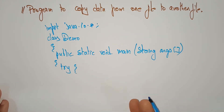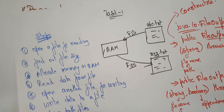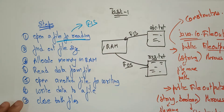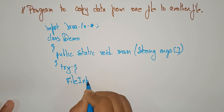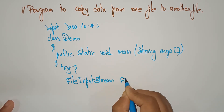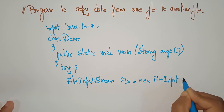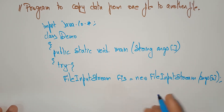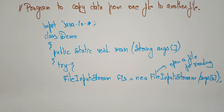First we need to write the try block. In the try block we write the task — if any error occurs it throws a catch exception. The first step is to open a file for reading. To open a file for reading we use FileInputStream. The syntax is: FileInputStream fis = new FileInputStream(args[0]); — this opens a file for reading only.